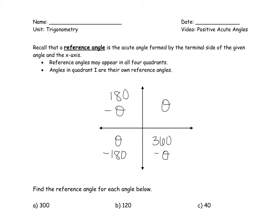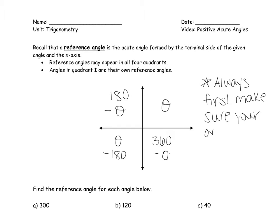Always, first make sure your original angle is between 0 and 360. If you need to use coterminal angles, you will.